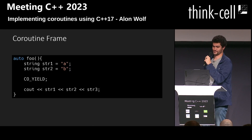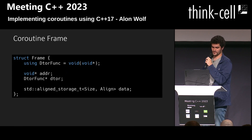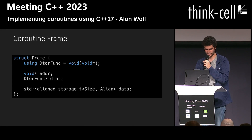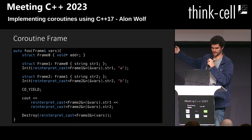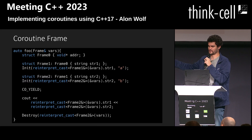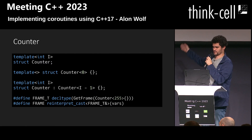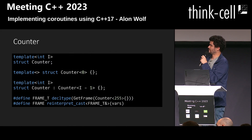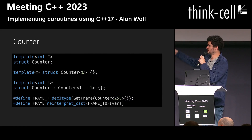Another property of coroutines is that we need to manage lifetimes. If we yield in the middle and then go back, and then exit the function by returning, the variables will be destroyed — which is not good. So I created a struct that will contain all the variables in the coroutine frame. Then I declare a new frame which inherits from the previous frame and adds another variable so we can calculate the size of all the current variables in the coroutine frame. Counter is a struct that recursively inherits from itself, and we can use the frame macro to get the value of the last counter and get the current coroutine frame.